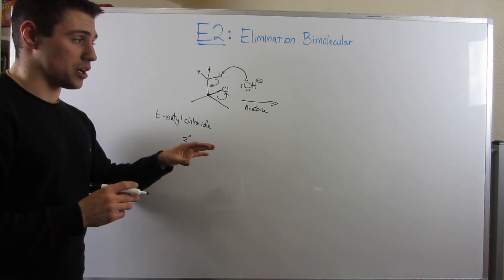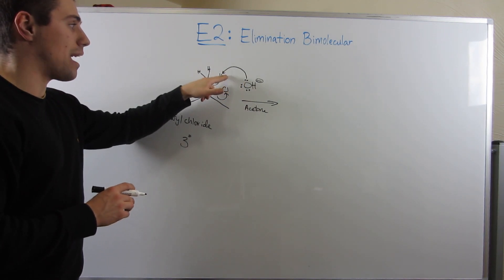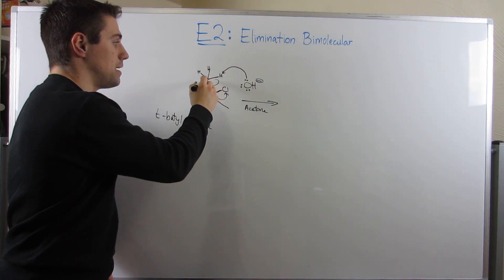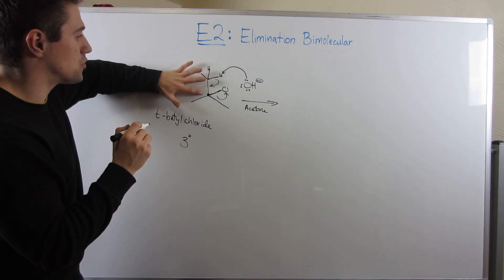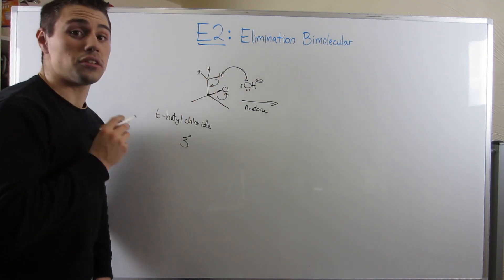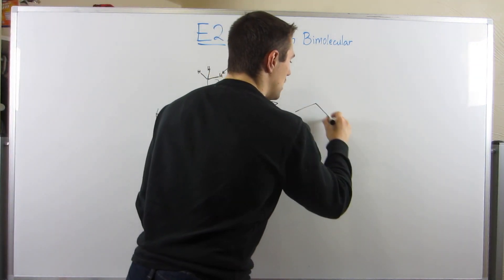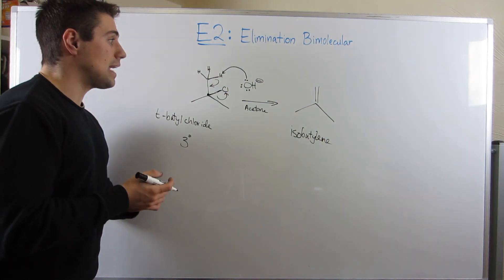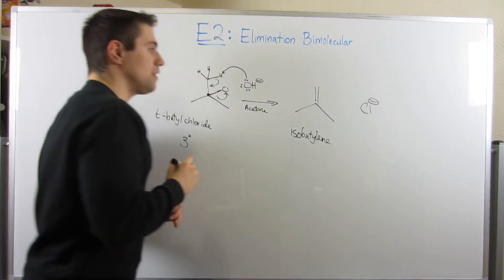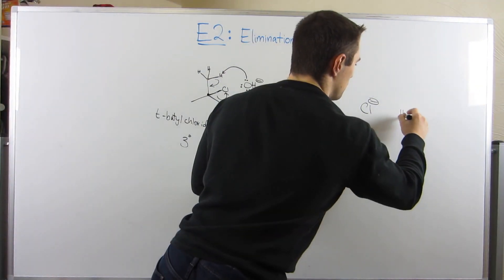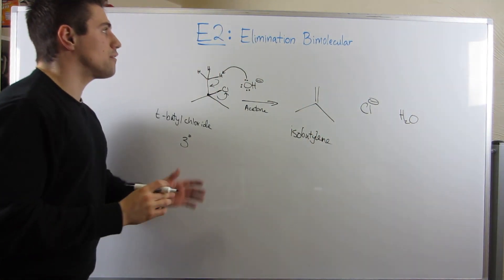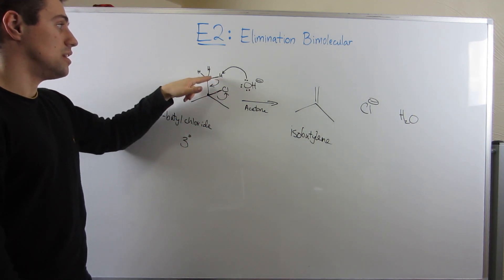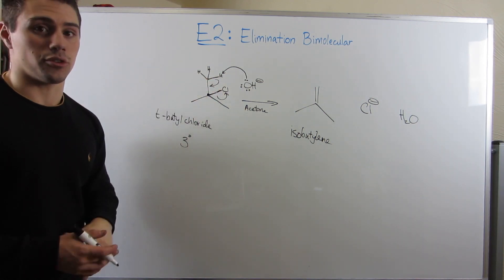Just to recap, because we have three arrows going on. OH- is taking two electrons and grabbing this H+, just the H+, no electrons coming along with it. The electrons that were in this bond between this carbon and hydrogen are going to make a double bond right here. While that double bond is forming, to avoid breaking the octet rule, we're kicking off a good leaving group. Here's the result. We make isobutylene, and we also make Cl- and water.